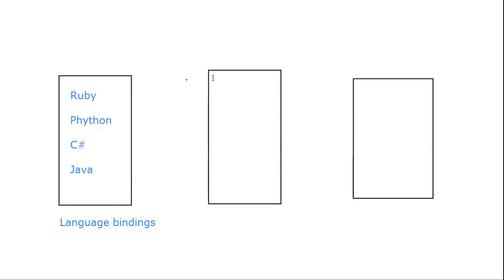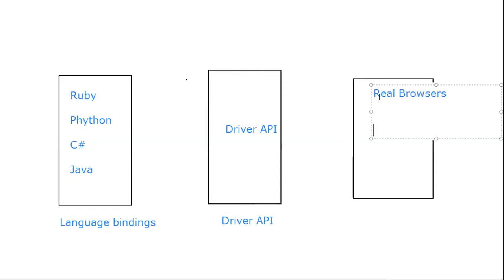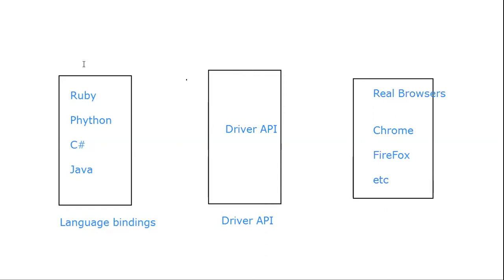Basically, this is your browser driver — the driver API. It is connected with the driver API. And the last block, we have the real browsers. So there are three main blocks: first is your language bindings, another is your driver API, and that is your real browser.